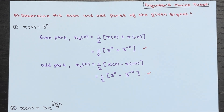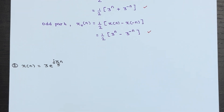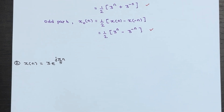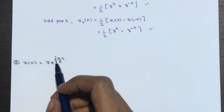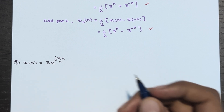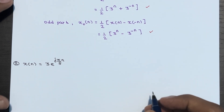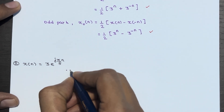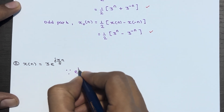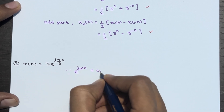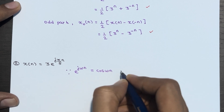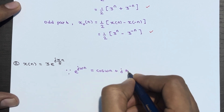Now let's look at a more complex example. We have another signal x(n) = 3·e^(jπn/5). As we know, e^(jωn) can be written as cos(ωn) + j·sin(ωn).